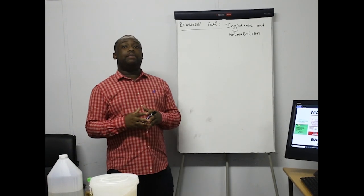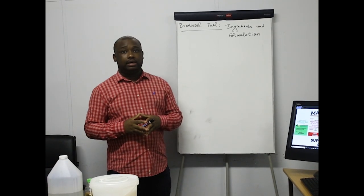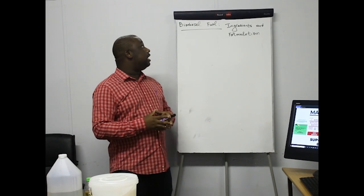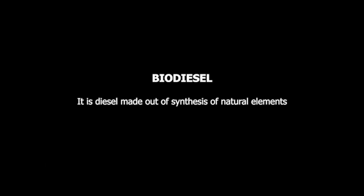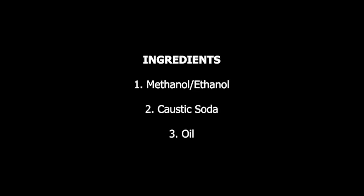What I'm going to show you on this video is how you can manufacture biodiesel. What is biodiesel in the first place? It's actually diesel — they call it bio because it's made out of natural elements. The three main ingredients you need are methanol, caustic soda, and oil.